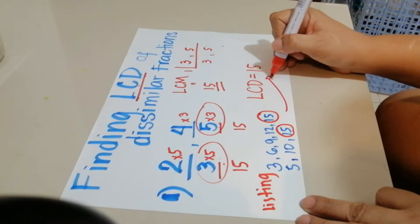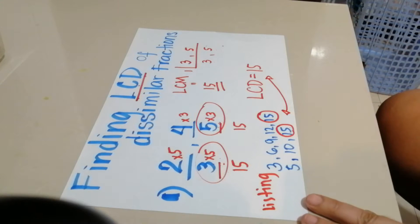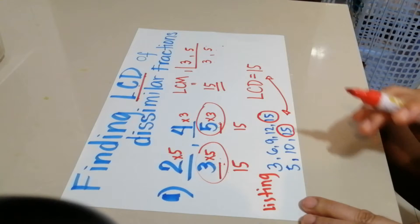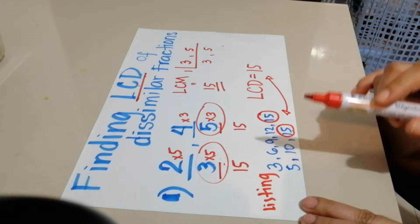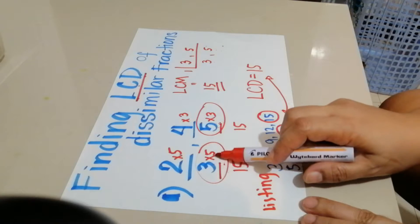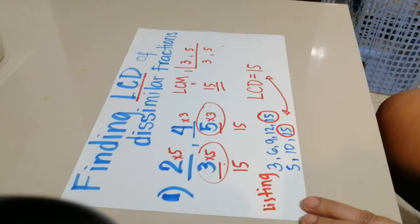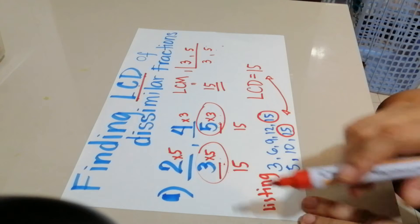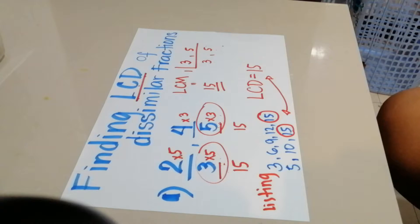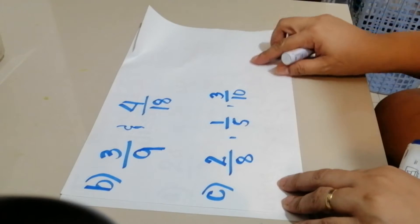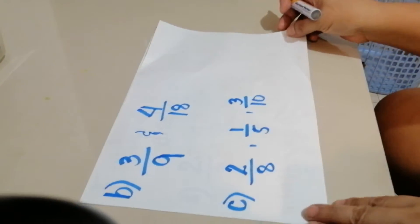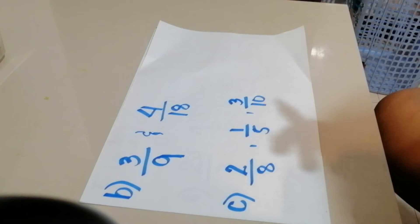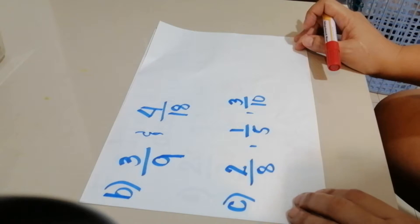This is the same result as before. So that is how you find the LCD — you can use LCM, listing, or interchanging the denominators. Another example: what if we have fractions with denominators 9 and 18? We can get the LCD using LCM or by listing.